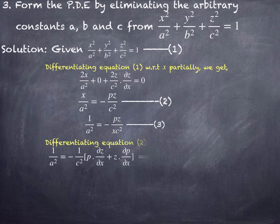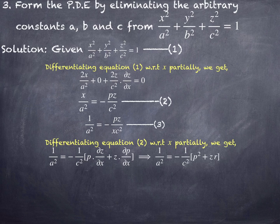Now differentiating equation number 2 partially with respect to x: 1/a² remains; −1/c² is a constant; p and z are both functions of x, so apply the product rule — first function p times differentiation of z (which is ∂z/∂x = p), plus second function z times differentiation of p (which is ∂p/∂x = r, i.e., ∂²z/∂x²). This gives 1/a² equals −(1/c²)(p² + zr). I already have the value of 1/a².